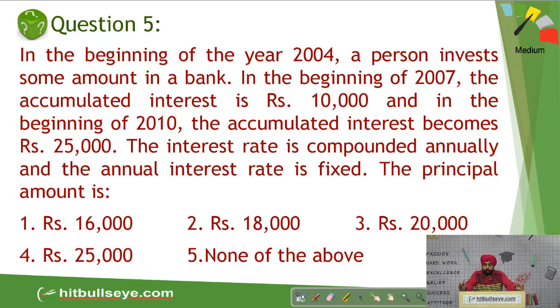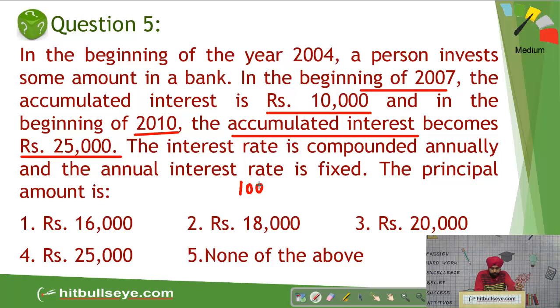Moving on, students carefully, you can do this question without writing if you analyze it carefully. I hope you have read it. See, for 3 years from 2004 to 2007, you get an interest of 10,000. Now for 3 more years, you have got a total accumulated interest of 25,000. Now students, it will include the initial 10. It includes 10,000 on the same initial principal plus you are getting 5,000 more.